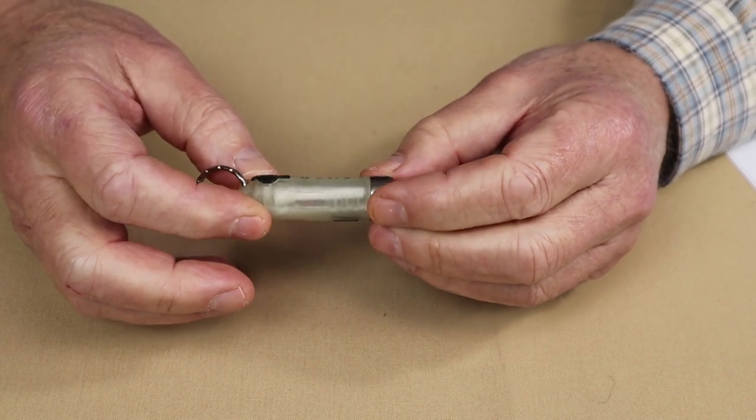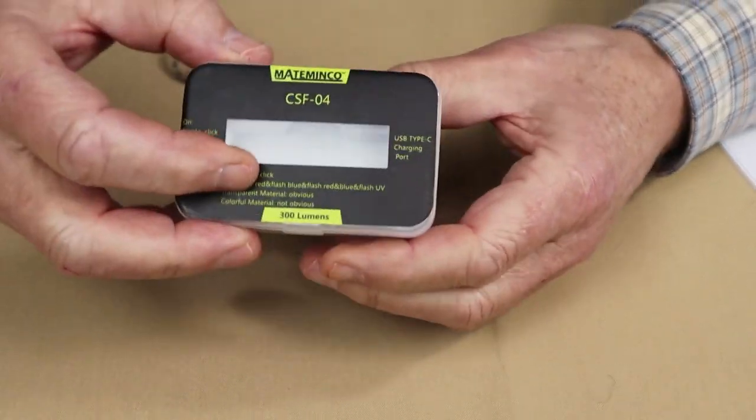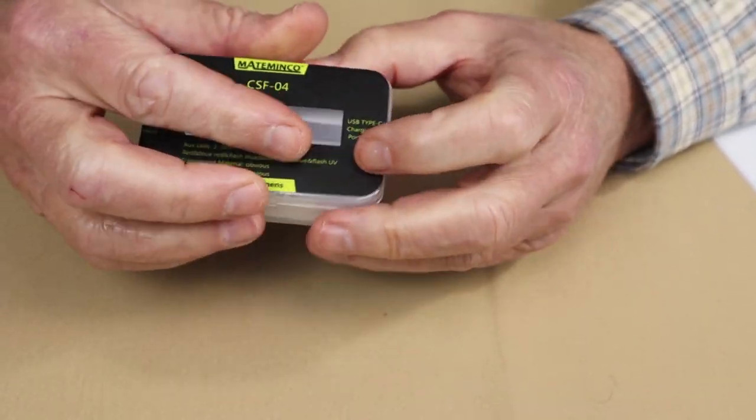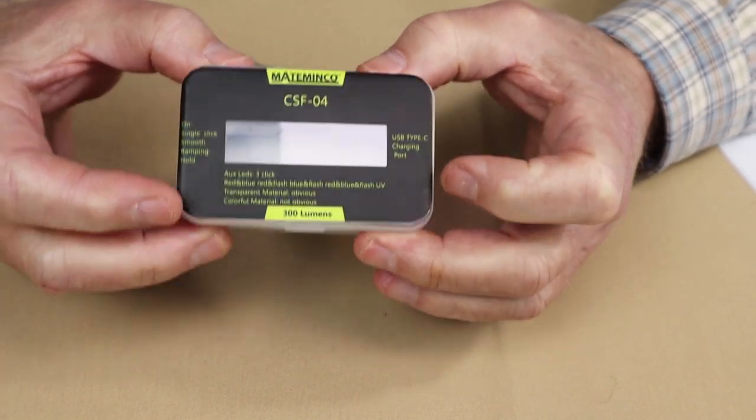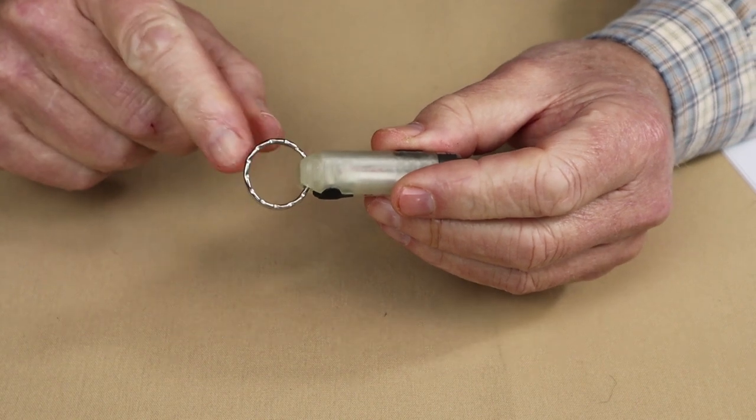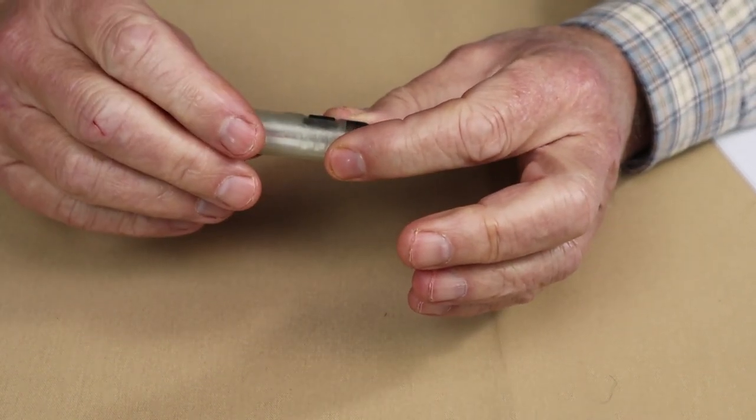Alright, just before we take a closer look at the Mataminko CSF04 flashlight, I thought I'd share with you what it came with. So the light arrived in this box with a bit of information on the back. That's it. That's all that came with it, no charging cable, not even the split ring. That's something I put on it so I could carry it on my keychain for a while to test it out.